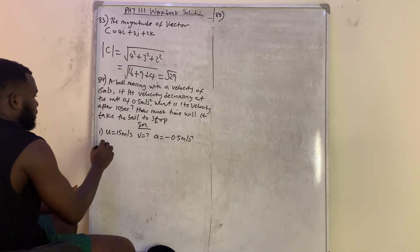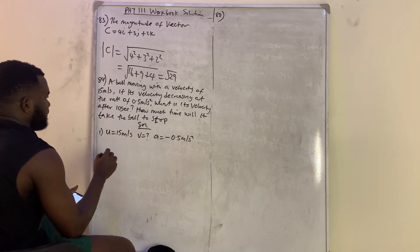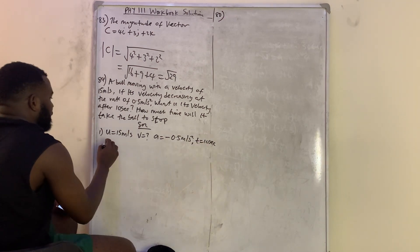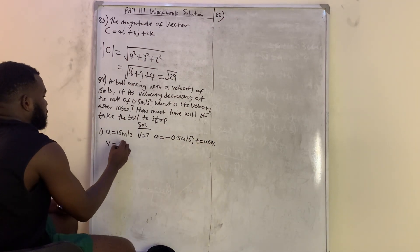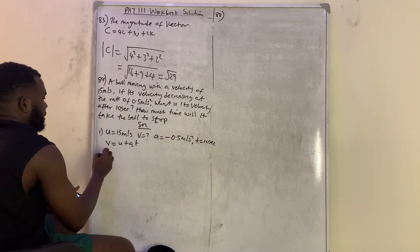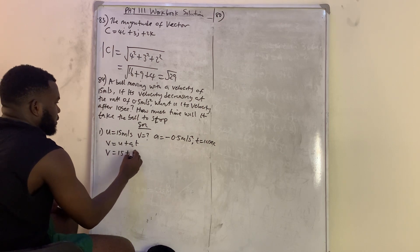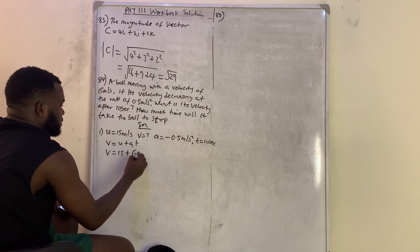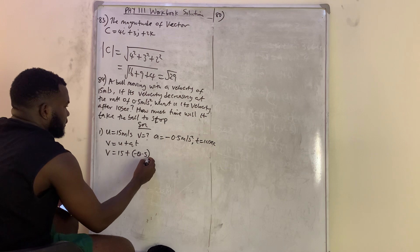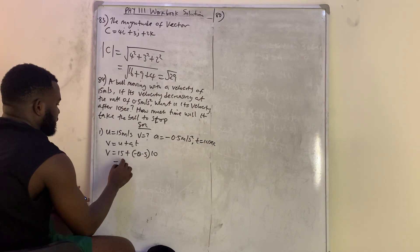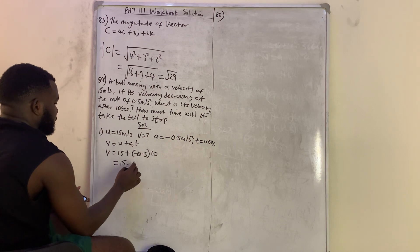We know that v equals u plus at. They gave us the time as 10 seconds. So my final velocity v equals 15 plus (minus 0.5) times 10, which is 15 minus 5, giving 10 meters per second.